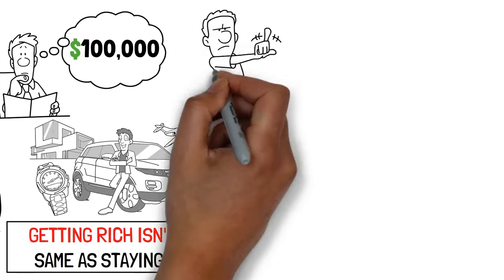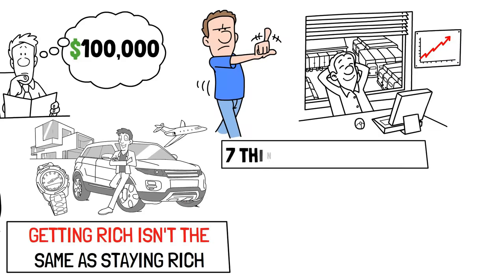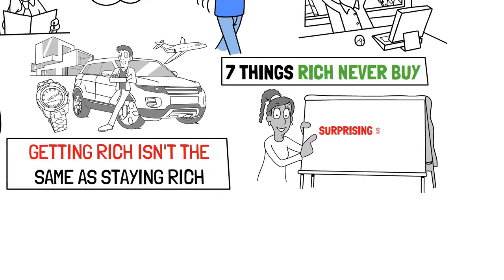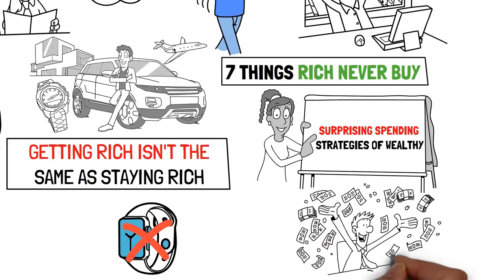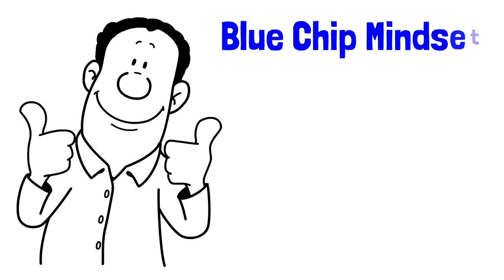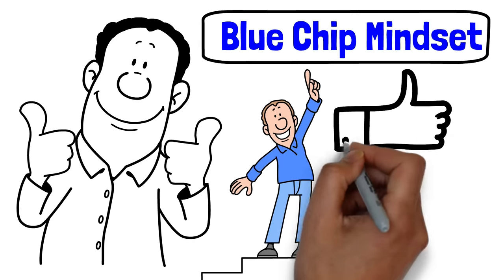And often it's the things you choose not to buy that contribute to long-term wealth. Today, we're unveiling seven things the rich never buy. So buckle up as we dive into the surprising spending strategies of the wealthy, revealing the everyday items they skip that remarkably keep their fortunes intact. Welcome to Blue Chip Mindset, the winning mindset for success. If you enjoy the video or learn something new, please give it a like.